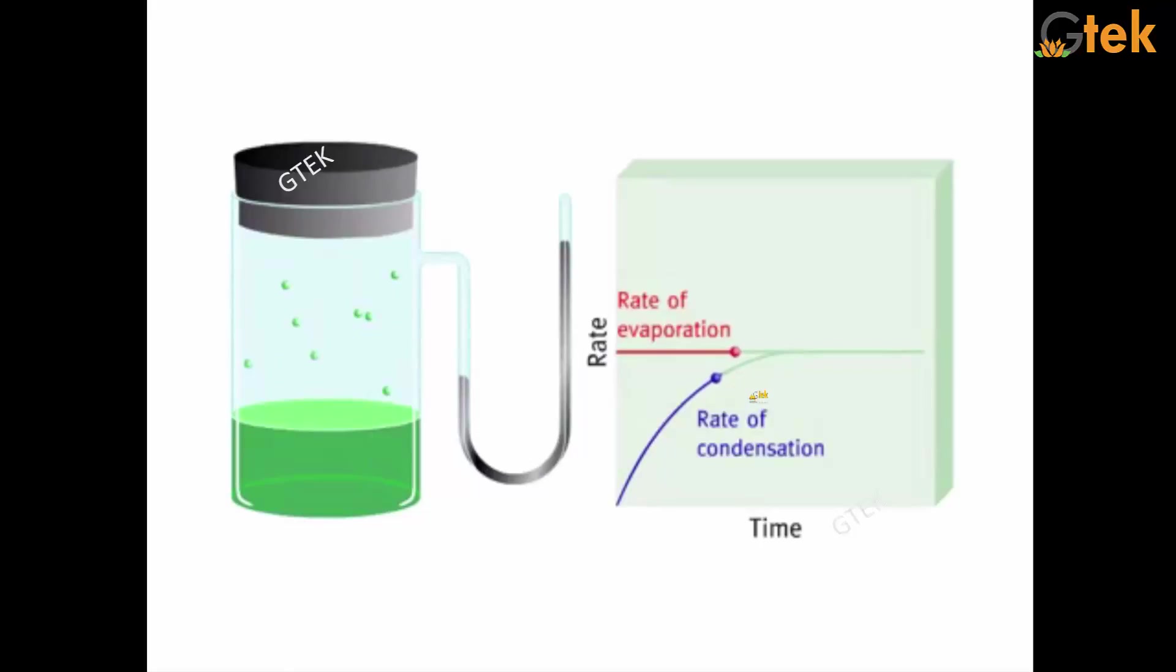This typical experiment is done in the GTEK laboratory and a 3D of the experiment is shown here. You are able to see at a particular point, the rate of evaporation and rate of condensation meets and it became a saturated point. A dynamic equilibrium is established.